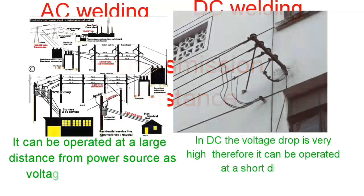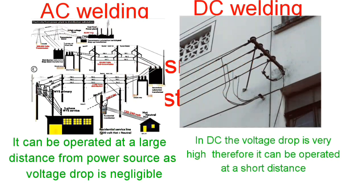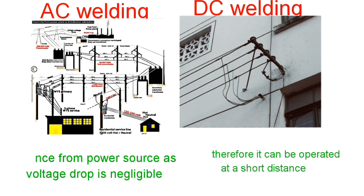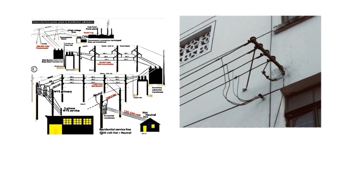Transmission Distance: AC welding can be operated at a large distance from the power source as the voltage drop is flexible, whereas in DC welding the voltage drop is very high, therefore it can only be operated at a short distance.